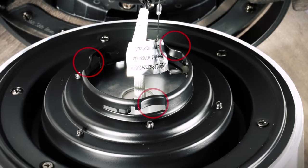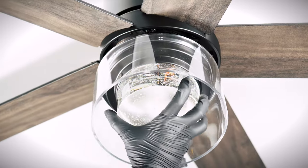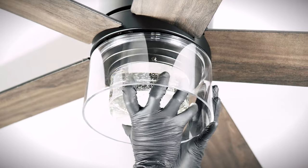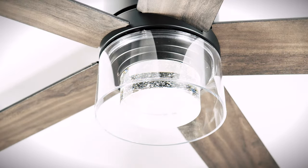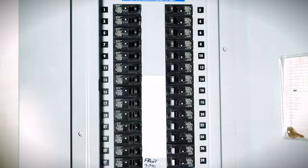Locate the notches on the light kit. Locate the tabs on the light kit mounting plate. Align the light kit notches over the tabs and turn clockwise partially. Release the light kit to drop it into place. Do not attempt to over tighten. Power can safely be restored at the breaker.